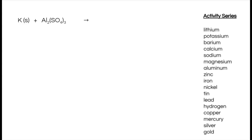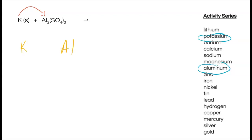Looking for the single displacement cues: element and compound — confirmed. Checking the activity series, potassium is near the top and aluminum is below it, so potassium can bump out the aluminum cation. Writing out ionic charges: potassium is plus one, aluminum is plus three, and sulfate (SO₄) is negative two — from the polyatomic ion chart.